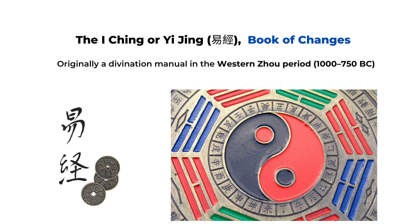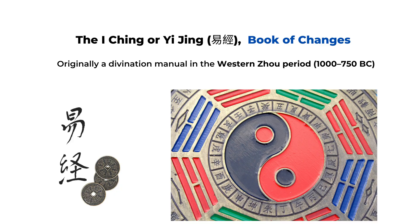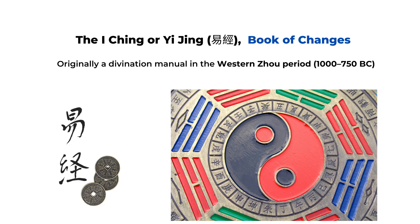It has information on all 64 hexagrams or 64 Gua, and those 64 numbers are based on the Ba Gua — the eight trigrams. This book is originally from the Zhou dynasty, about 1000 to 750 BC. Most Chinese metaphysics have the same theory; it's all based on yin and yang and Taiji, and then developed into the Ba Gua or the eight trigrams.